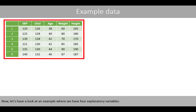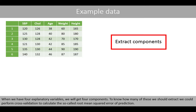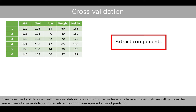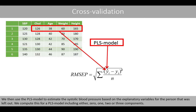Now let's have a look at an example where we have four explanatory variables. In addition to the cholesterol level and age, we now also have measurements of body weight in kilos and body height in centimeters of the six individuals. When we have four explanatory variables, we will get four components. To know how many we should extract, we could perform cross-validation to calculate the root mean squared error of prediction. Since we only have six individuals, we will perform leave-one-out cross-validation and compute PLS models including either 0, 1, 2, or 3 components.